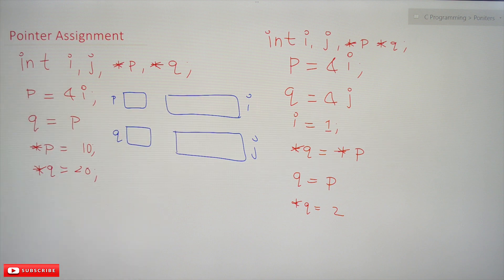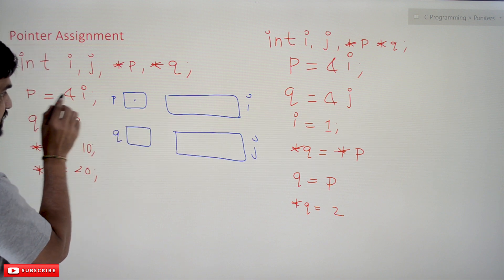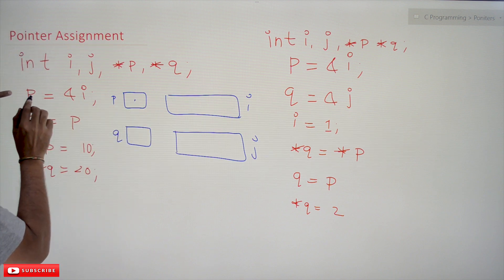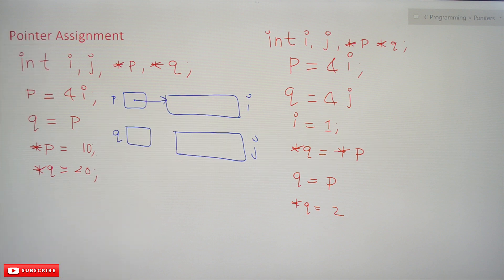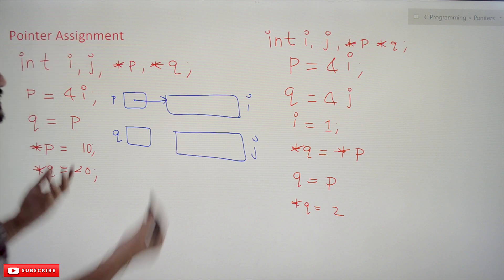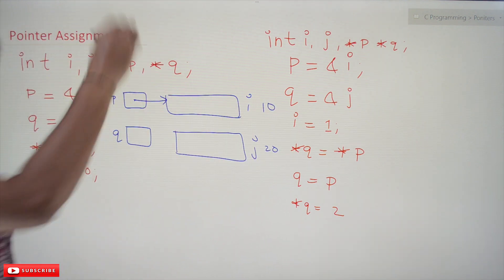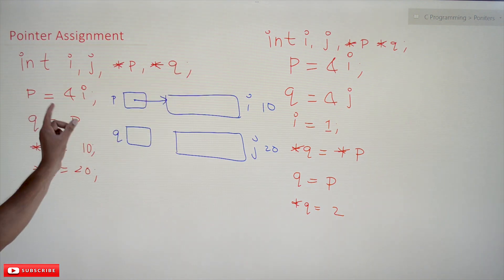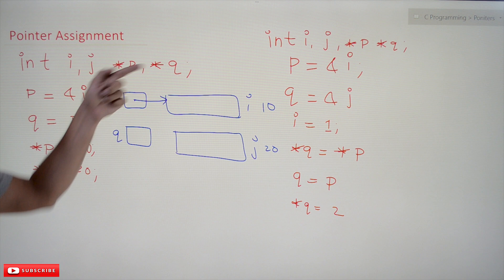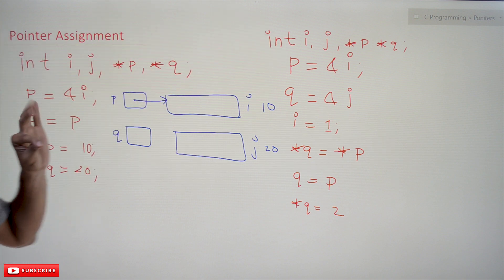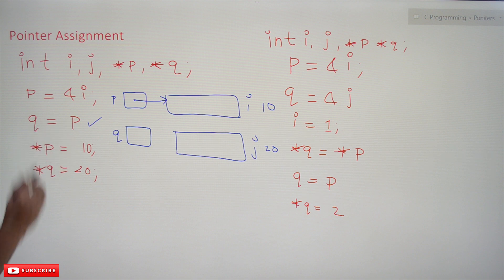The next line is p = &i, so here the assignment of the pointer has been done — this is how initialization is done. The address of i, let's assume 10, and j's address as 20 in memory. So 10 is getting stored in p, meaning p is pointing to memory location 10.